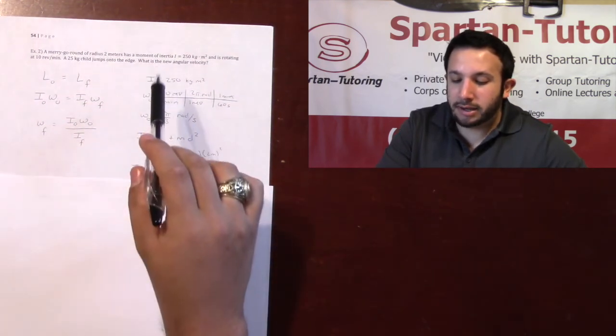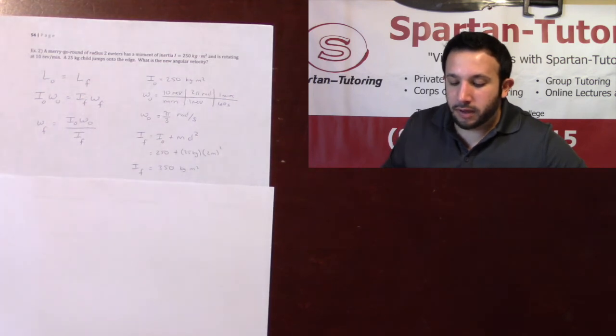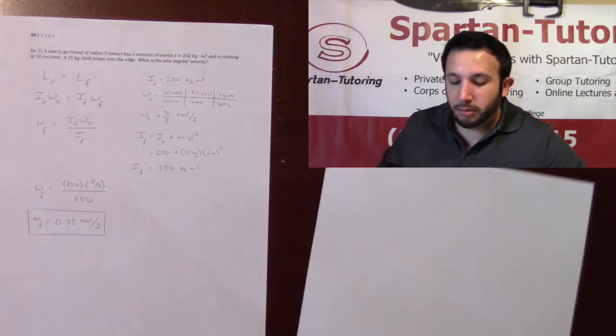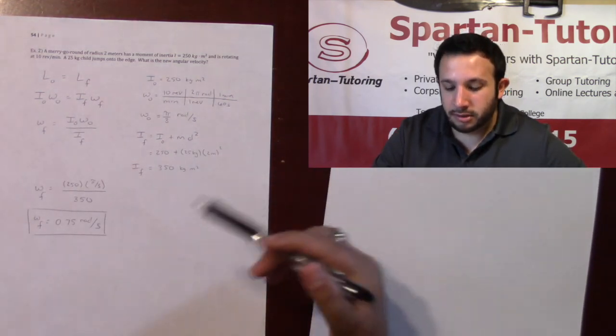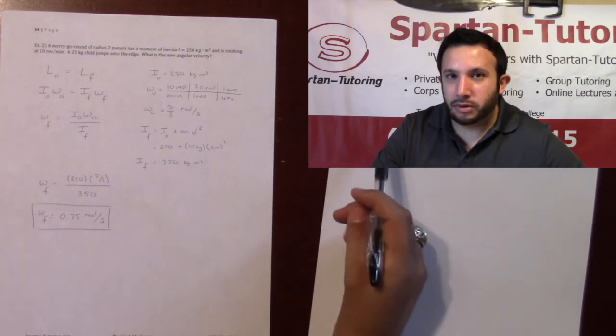And now that you have I0, now that you have omega0, now that you have IF, you can find your final angular velocity by just plugging all of those numbers into your calculator. And that is how angular momentum is going to work.